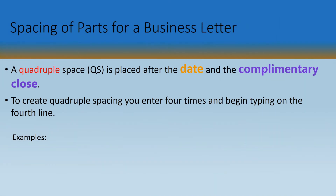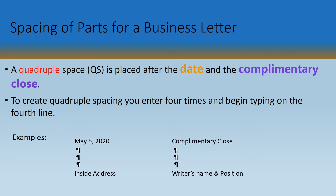A quadruple space is placed after the date and the complimentary close. To create quadruple spacing, you press Enter four times and begin typing on the fourth line, as per the examples shown.